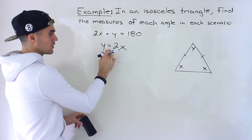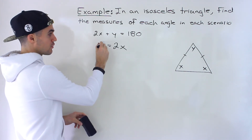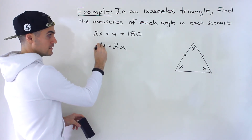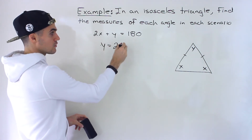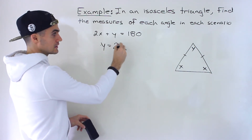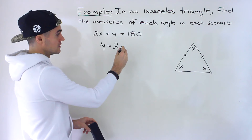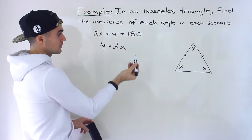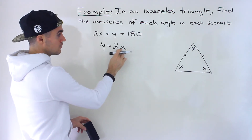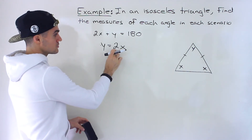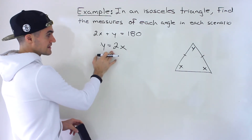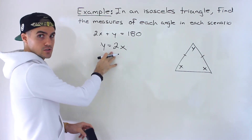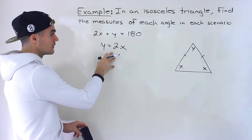To restate: the third angle y is double each of the equal angles. So we take the equal angle x, multiply it by 2, and get the third angle. That gives us y equals 2x as the second equation for Part B.